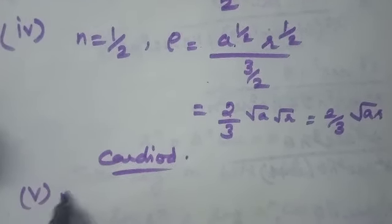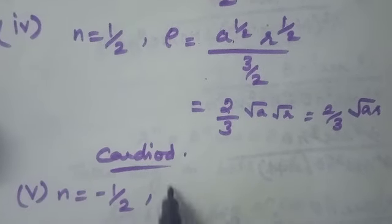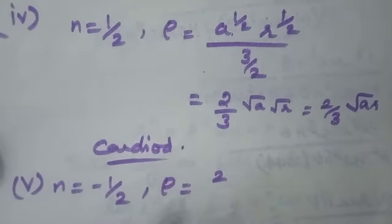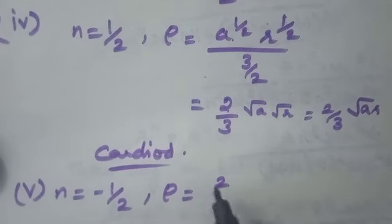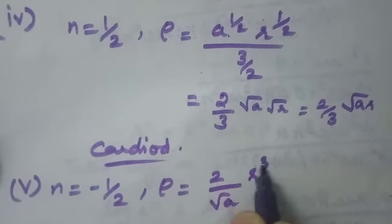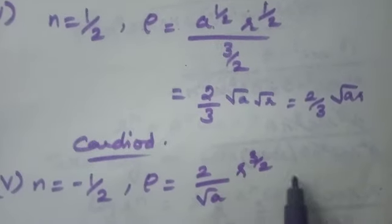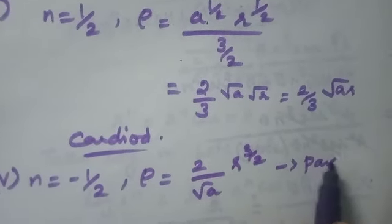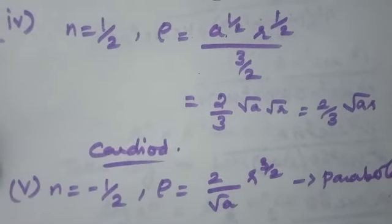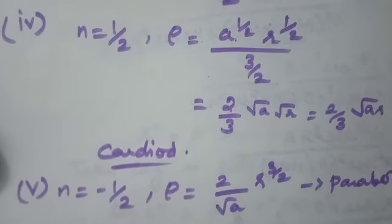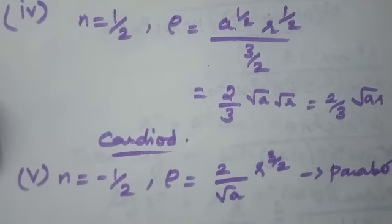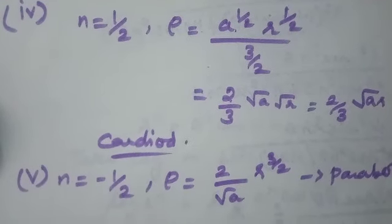The fifth case: if n = −1/2, then ρ = (2/√a) · r^(3/2). This is known as a parabola. These are all the particular cases. As the value of n changes, we can identify the corresponding curve. Thank you.